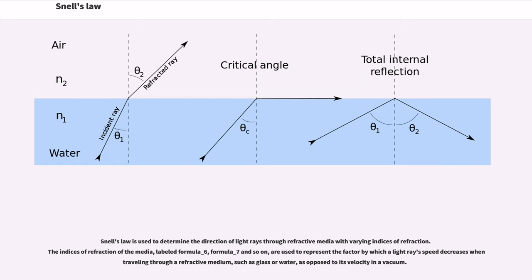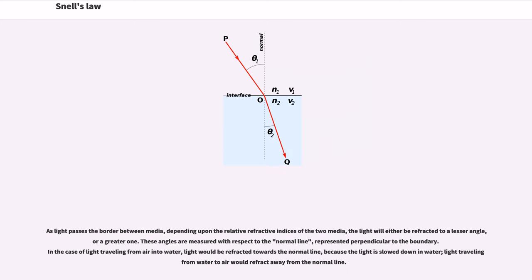Snell's law is used to determine the direction of light rays through refractive media with varying indices of refraction. The indices of refraction of the media, labeled formula underscore 6, formula underscore 7 and so on, are used to represent the factor by which a light ray's speed decreases when traveling through a refractive medium, such as glass or water, as opposed to its velocity in a vacuum.